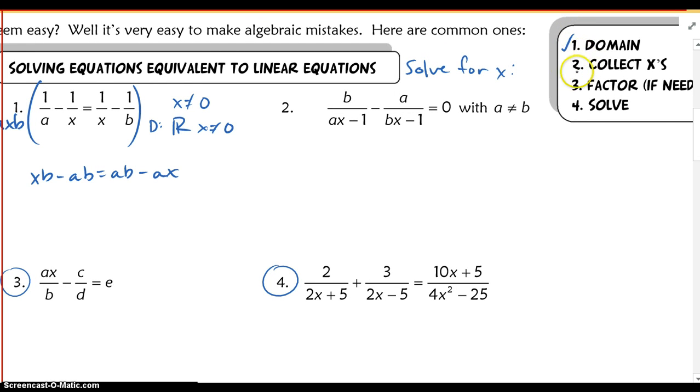And now our second step here is to collect the x's. What I mean by that is collect your variables to one side. So in this case, my variables, x b and a x here, I want to move those terms to one side. So x b is going to stay. a x is going to be added over. I'm going to move a b over to the other side. And when I add it, I'm left with 2 a b.